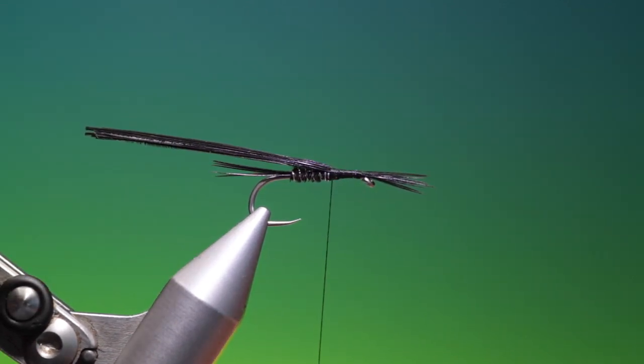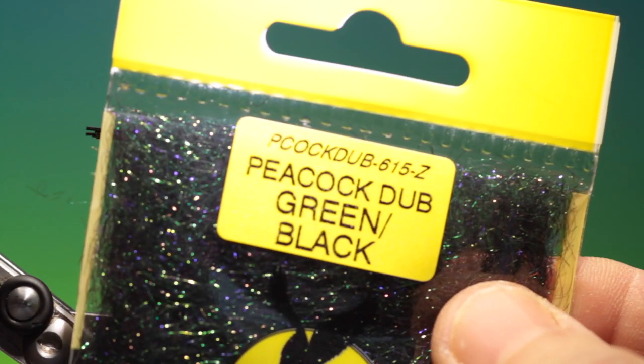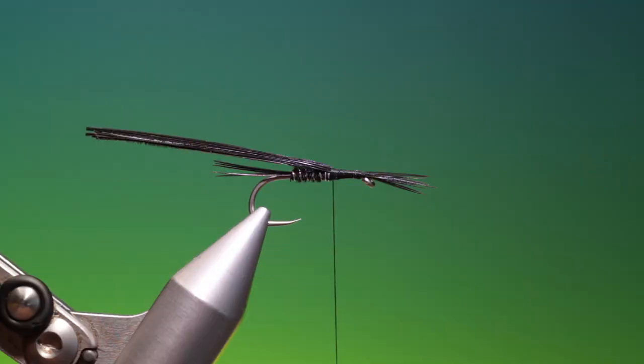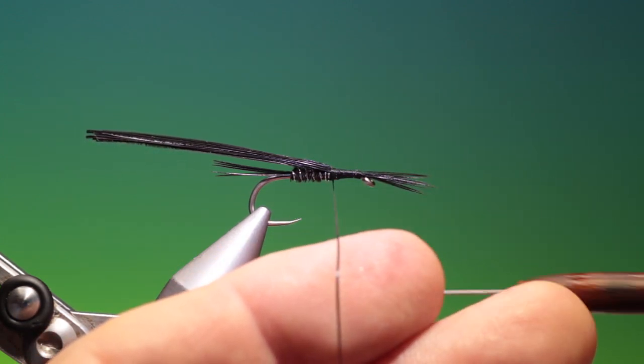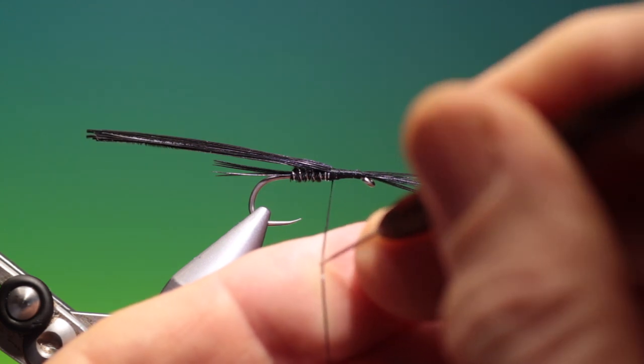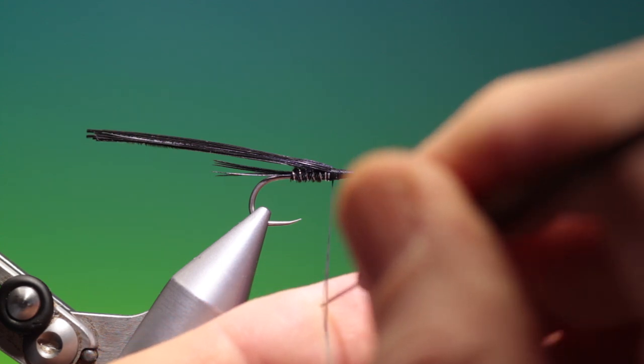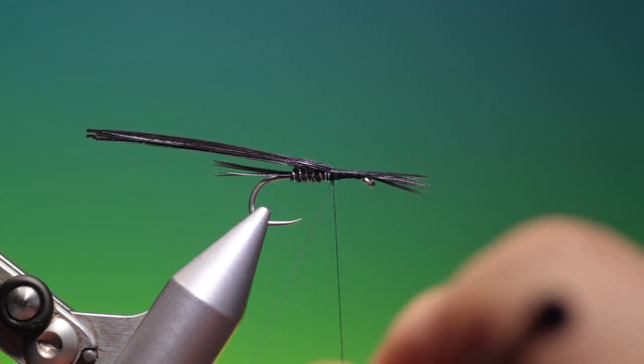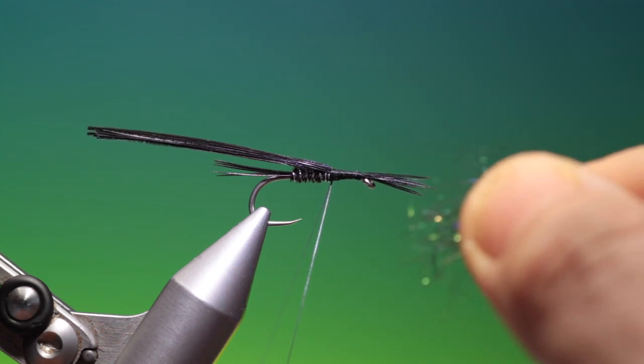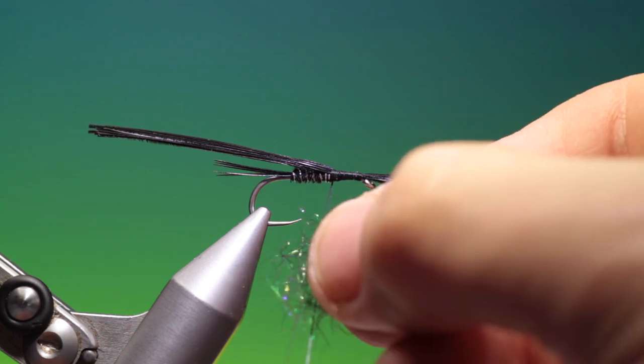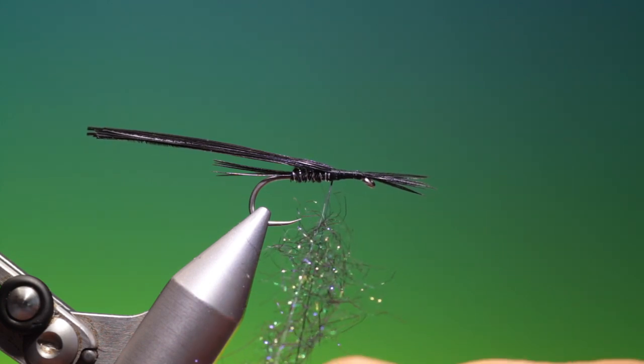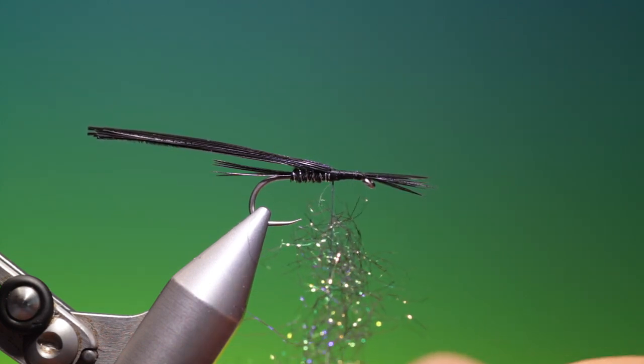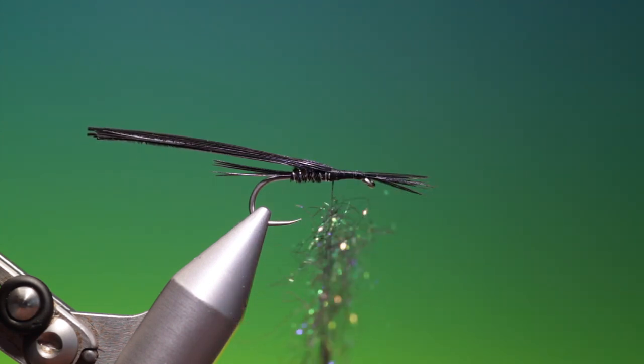And we'll just spin our tying thread anti-clockwise to give it a flat profile. Then I'm using some green black peacock dub. And we'll just flatten our thread there. Open that up. Take, we only need a very small amount of this peacock dub. And just place that in there. Like so. That's more than enough. We can spread it out a little. And we'll just spin that up.